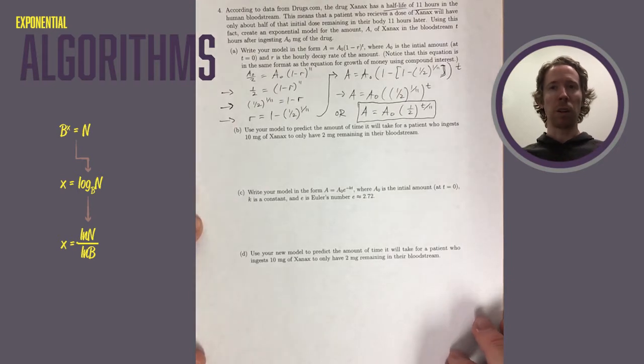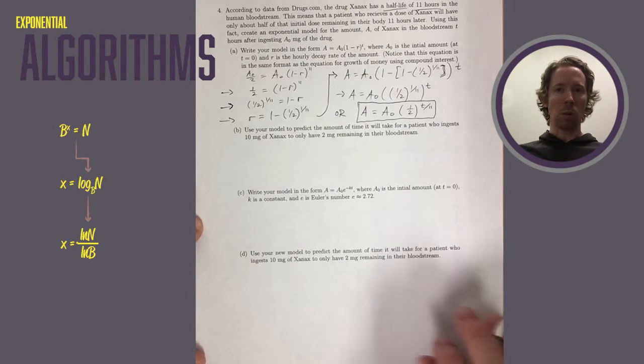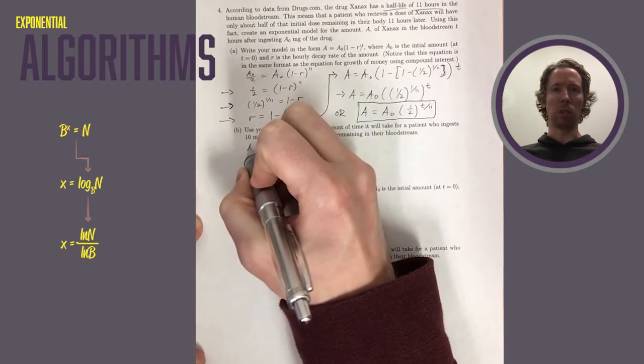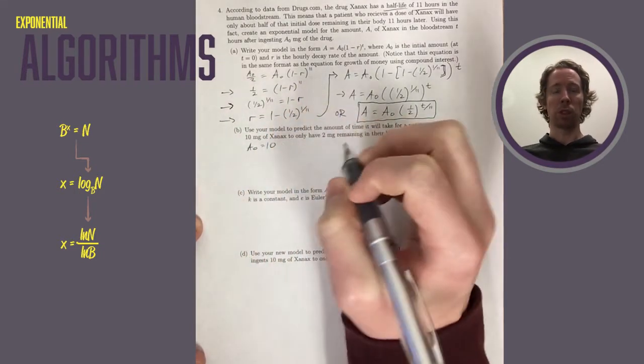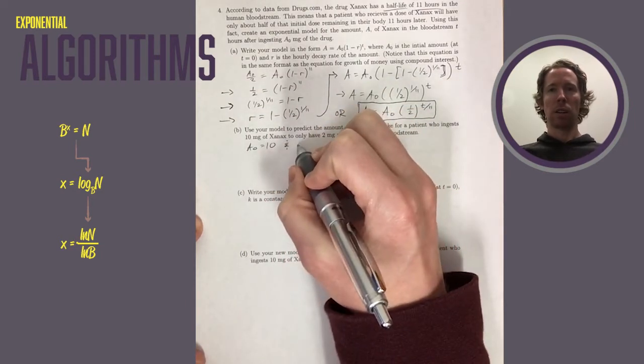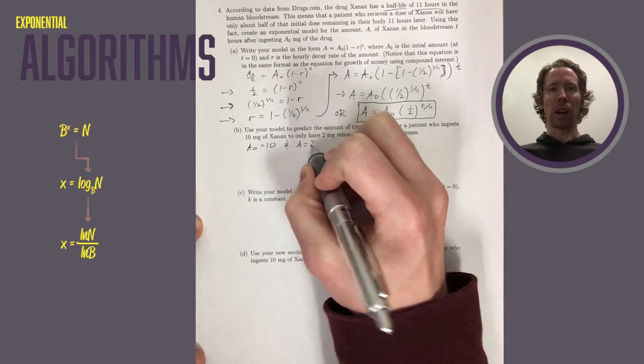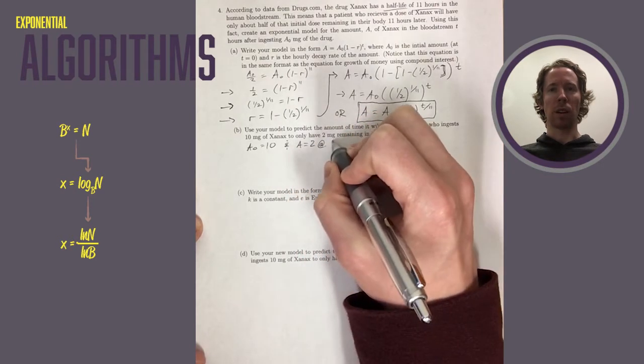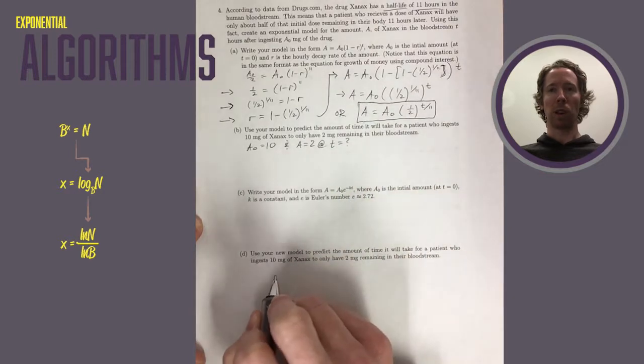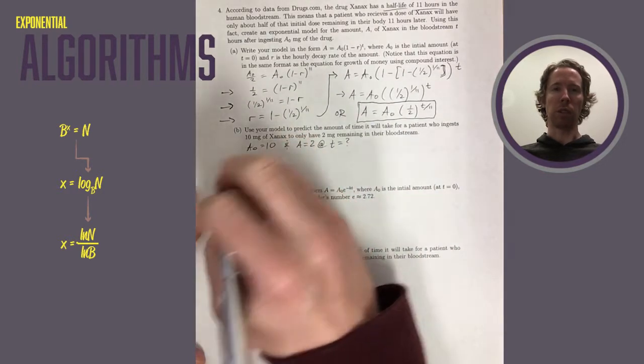Now, if somebody ingests 10 milligrams of Xanax, how long will it take for them to only have 2 milligrams left in their bloodstream? I'm just going to use the model that we just created. And we're going to plug in A0 equals 10. And then our final amount should be 2. So we plug that into the model and try to solve for T.